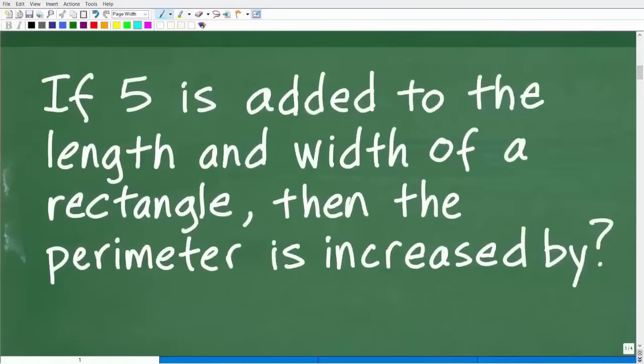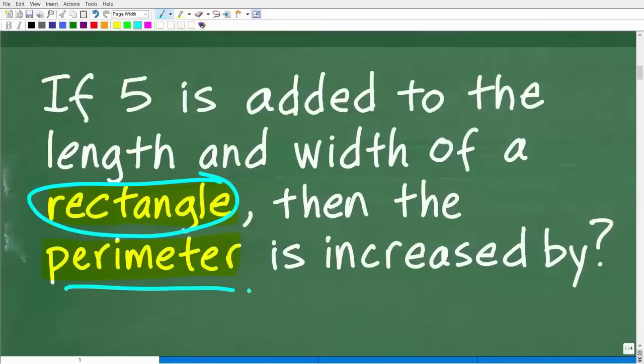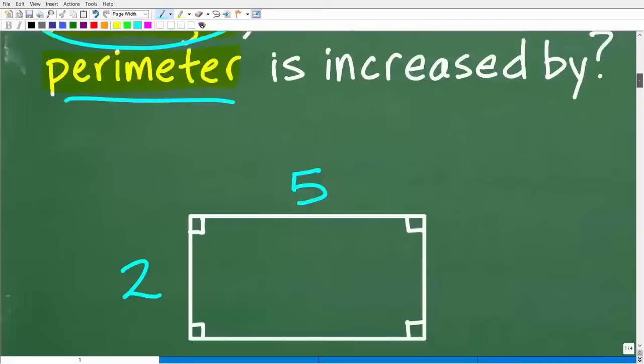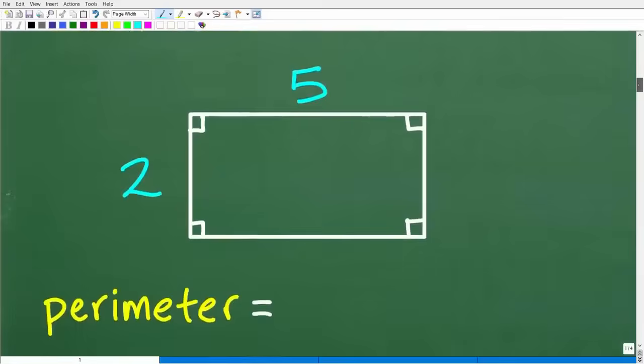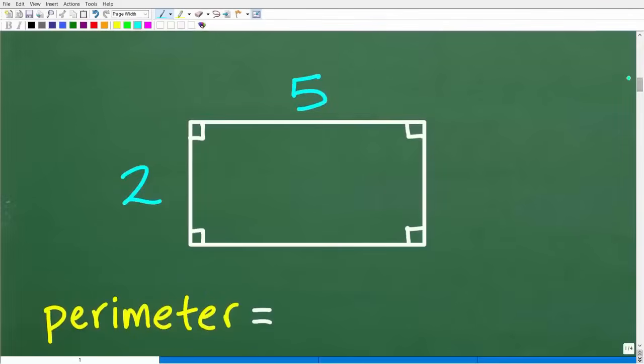To answer this question, we need to precisely understand what the perimeter is and what a rectangle is. Most of you probably know what the perimeter is, but let's go ahead and start with the perimeter first. Here is a rectangle, and I'm going to get into what the perimeter means in a second.